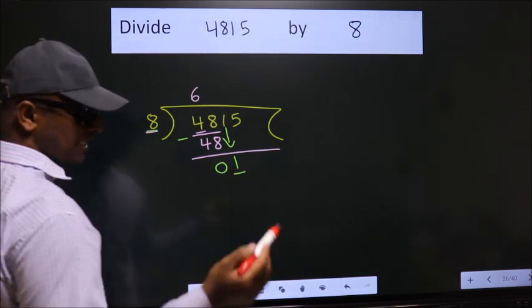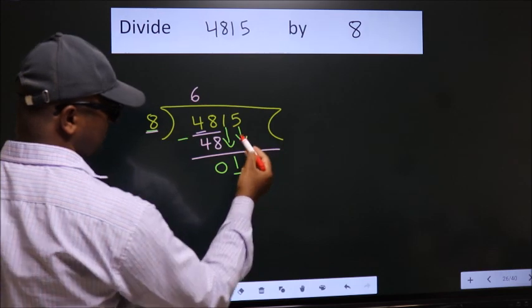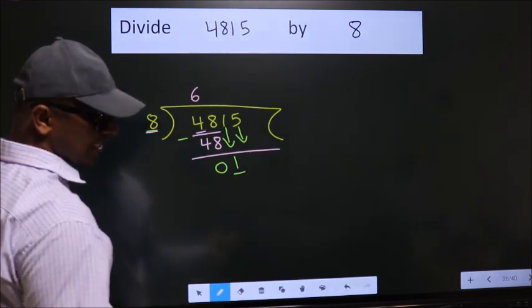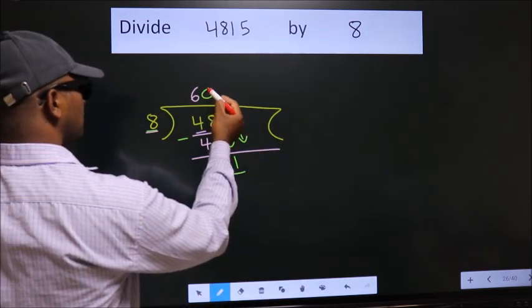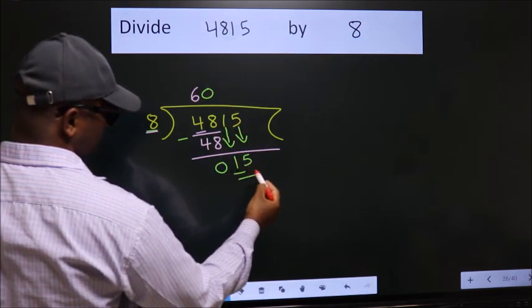So we should bring down the second number. And the rule to bring down the second number is put 0 here. Then only we can bring down this number.